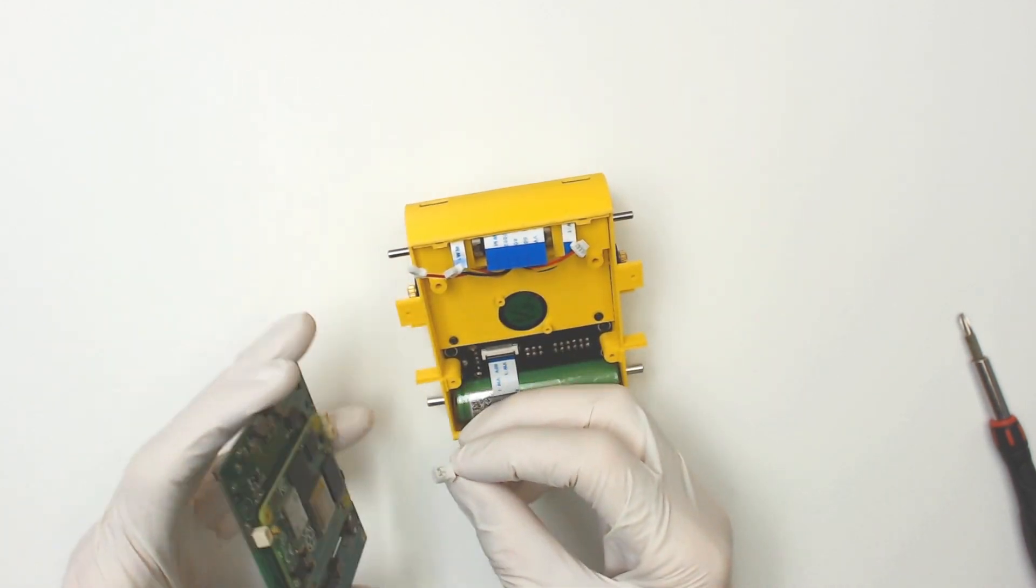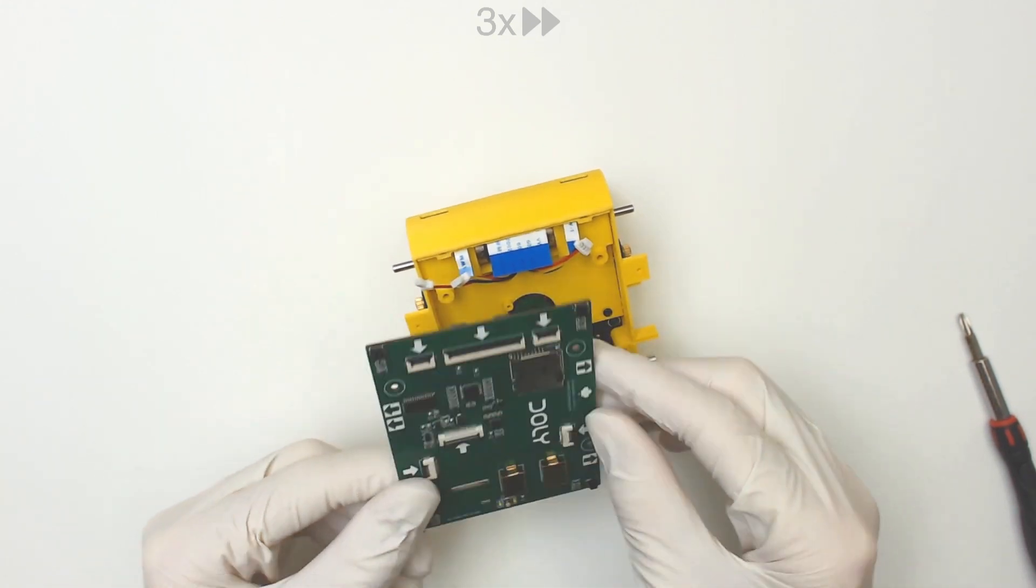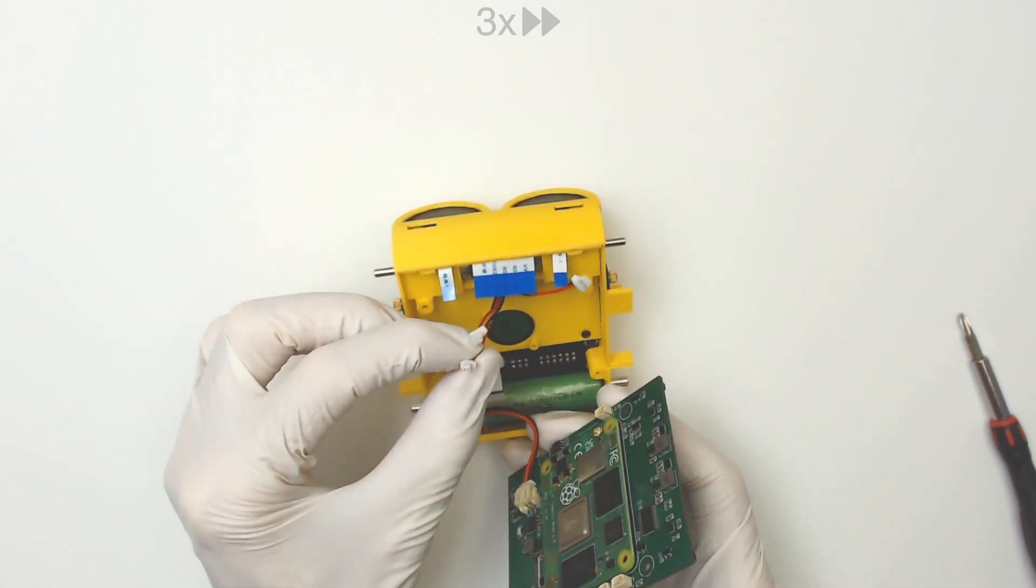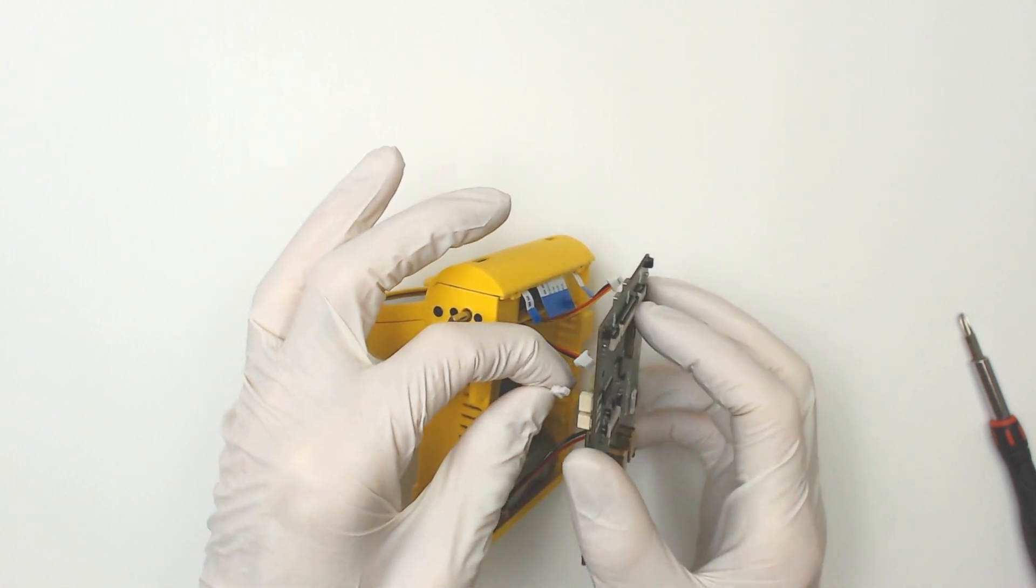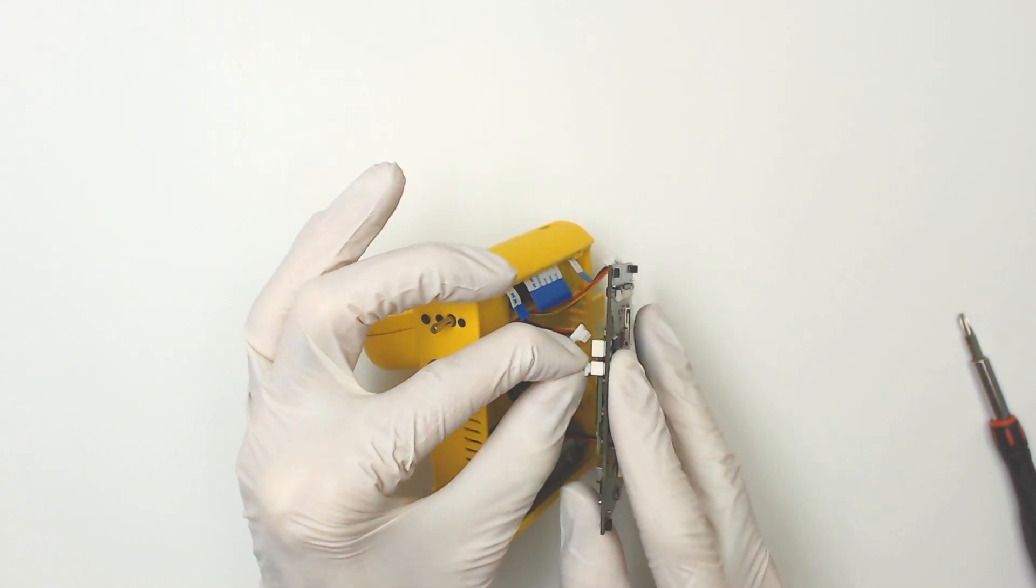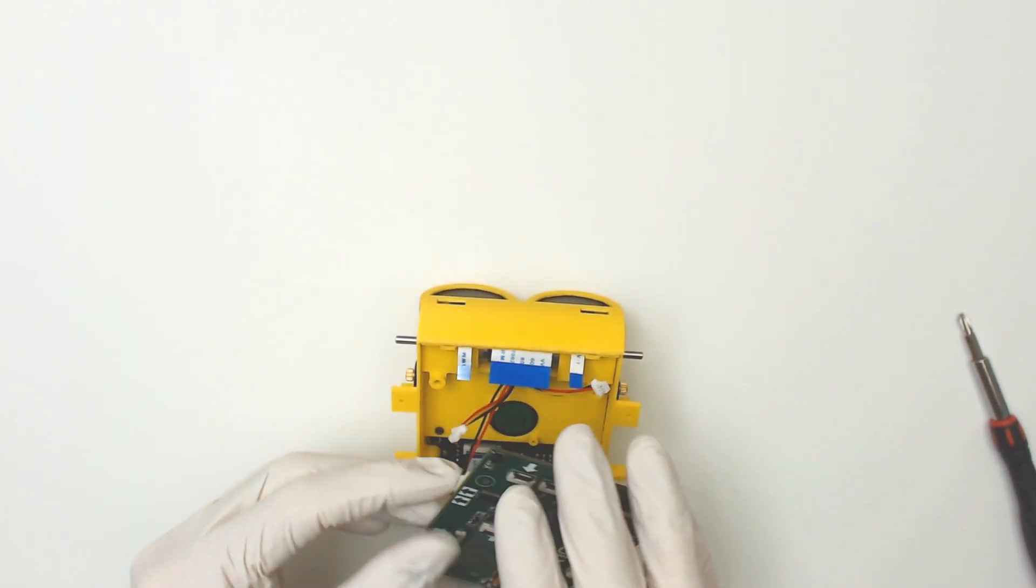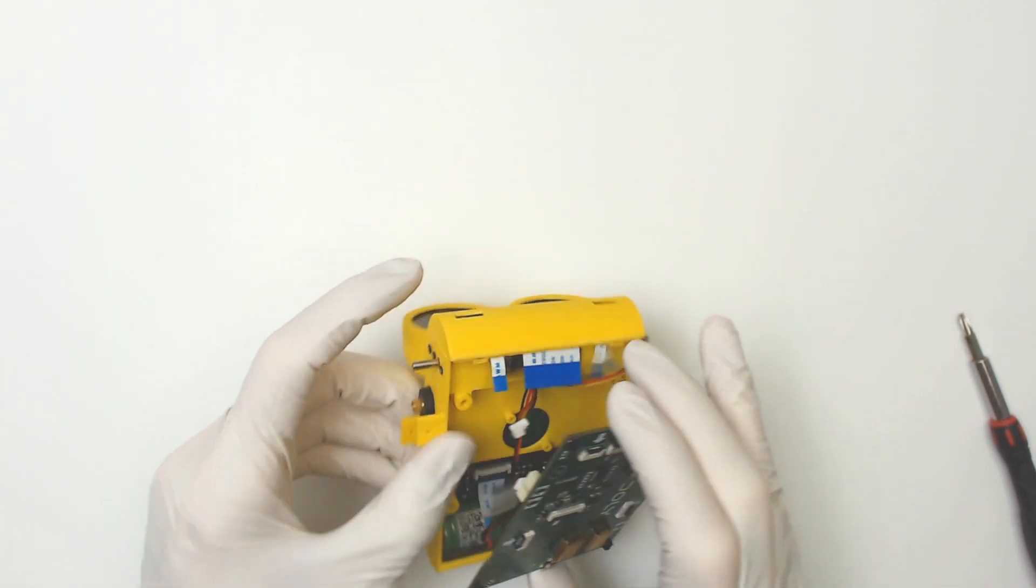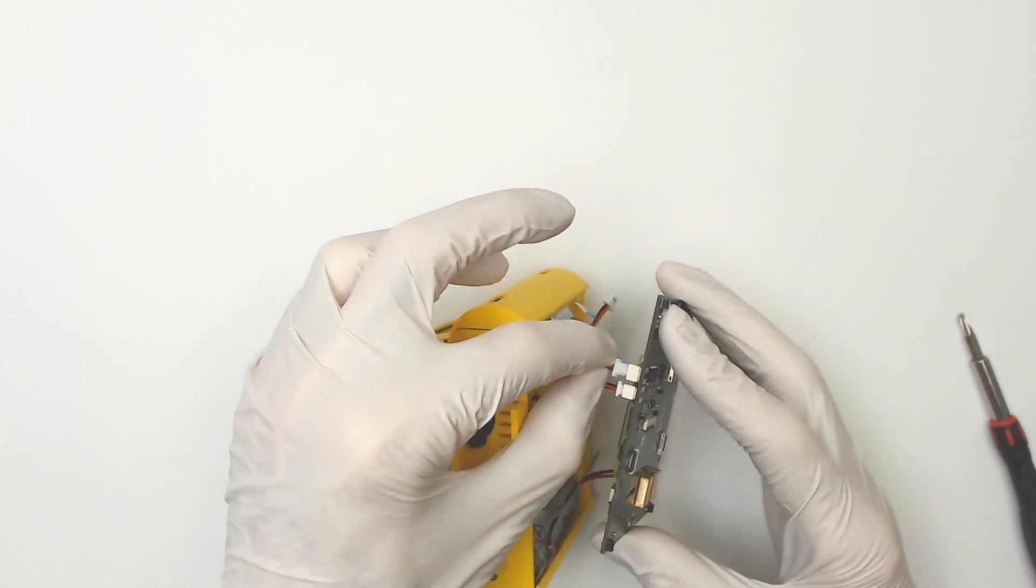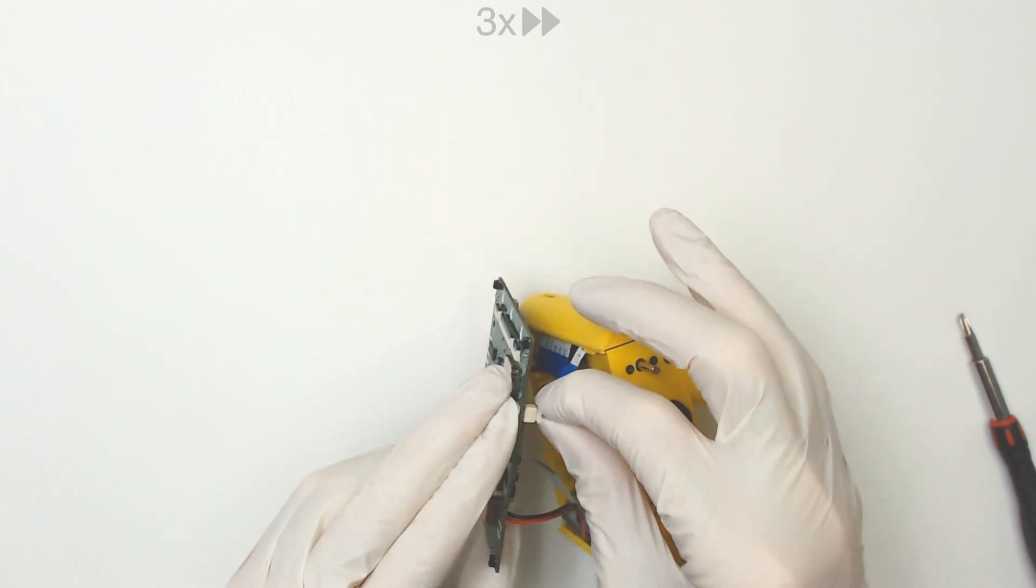Start with connecting the battery connector. Connect the fan connector, then connect the right servo connector and the left servo connector.